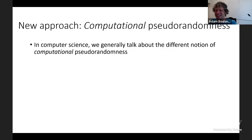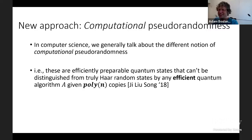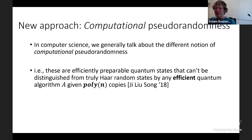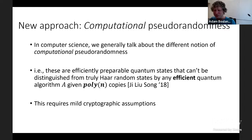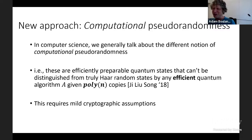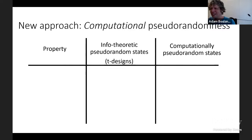There's an alternative way of thinking about quantum pseudo-randomness that's more natural from a computer science lens: computational pseudo-randomness. This means considering ensembles of efficiently preparable quantum states that are nevertheless indistinguishable from Haar-random states by any efficient quantum algorithm. This notion was first defined by Ji, Liu, and Song in 2018, and since then we've found wide applications of computational pseudo-randomness in the quantum setting.